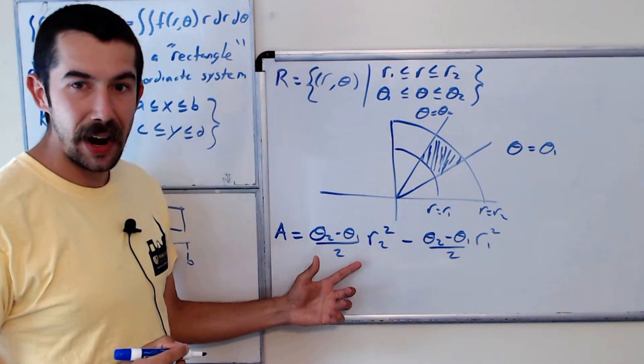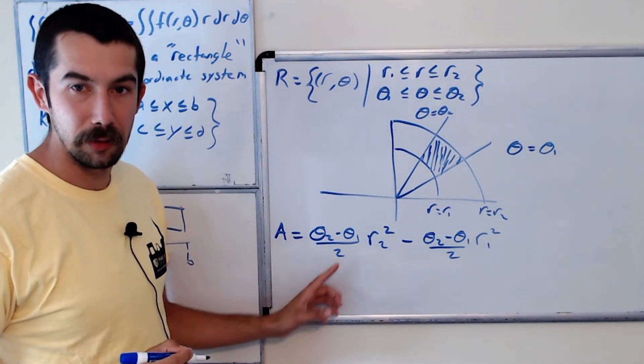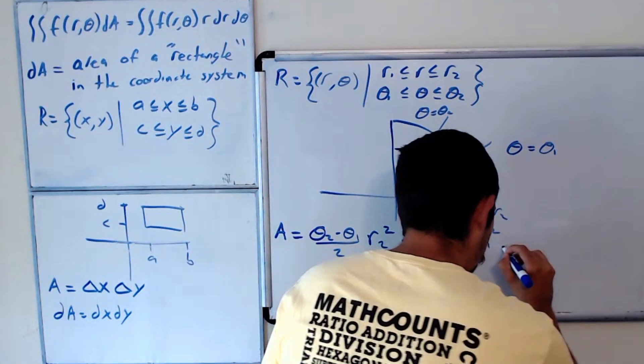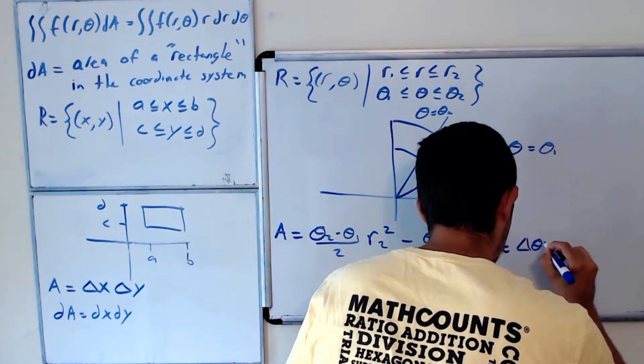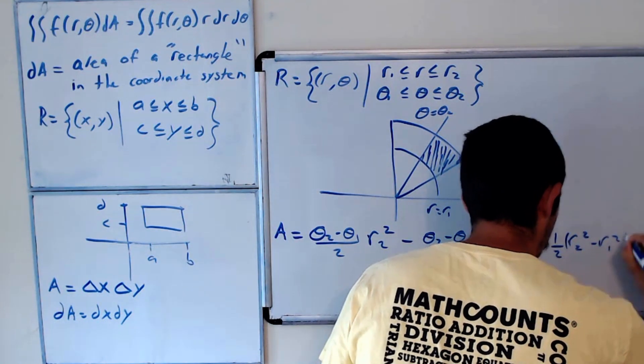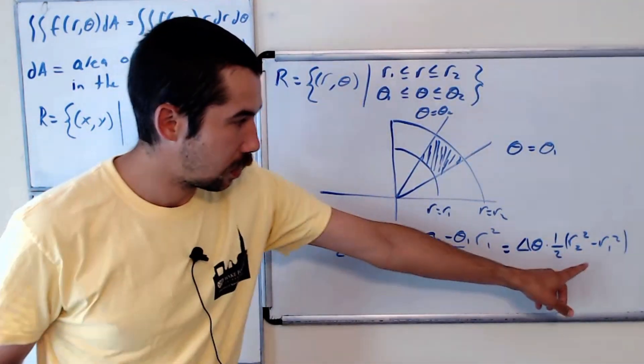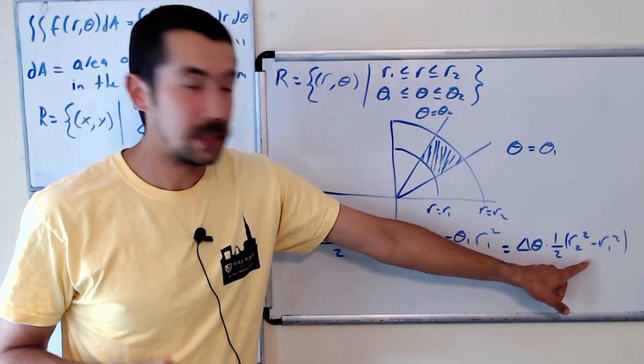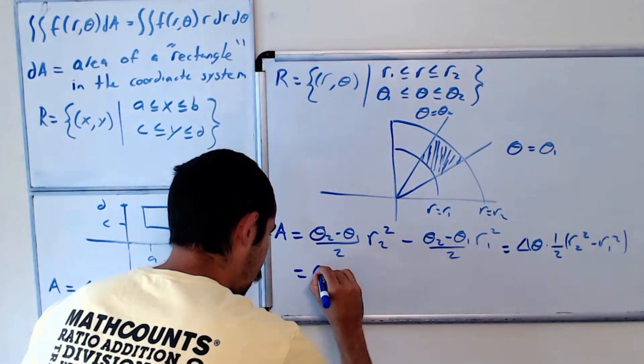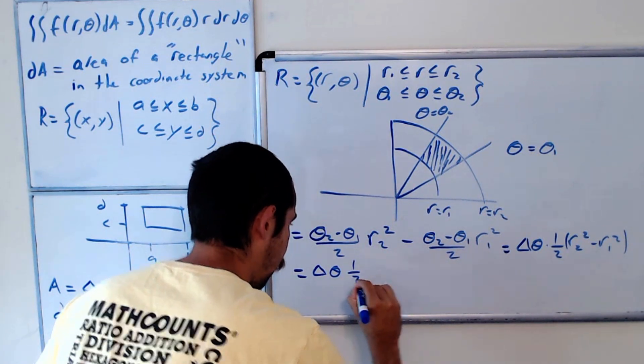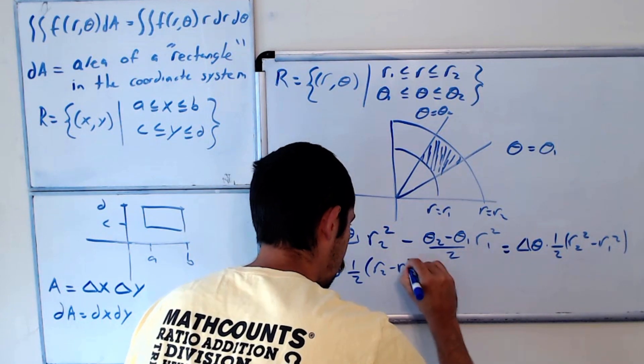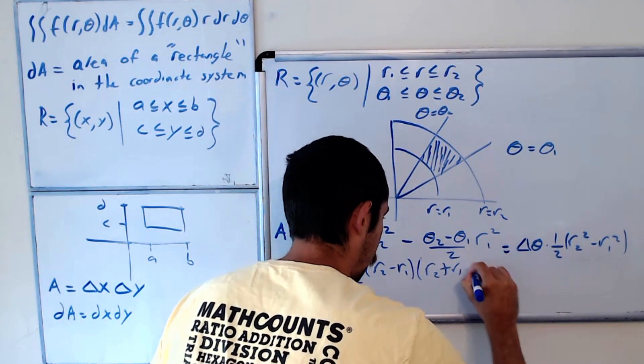And we could factor out (theta2 minus theta1) over 2. Well, theta2 minus theta1 we'll call delta theta. So this is delta theta times 1/2 (r2 squared minus r1 squared). But this here is the difference of squares, so this equals delta theta times 1/2 times (r2 minus r1) times (r2 plus r1).